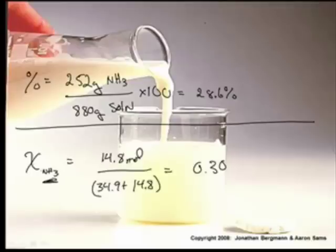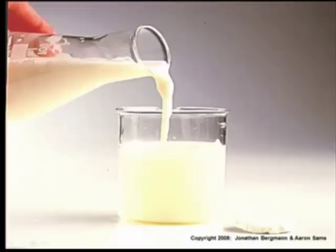And by the way, the way we write this, it's a funny x. There's a symbol for mole fraction. Chi. Chi, actually. And sub, and then you write the chemical, ammonia. Now we still need to do the molality.